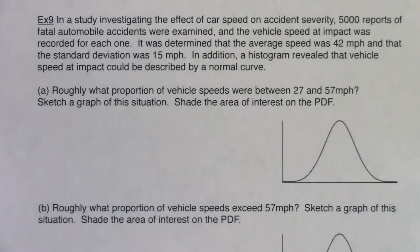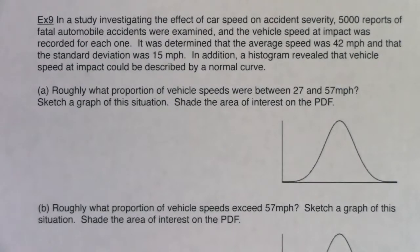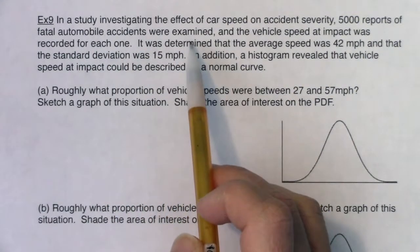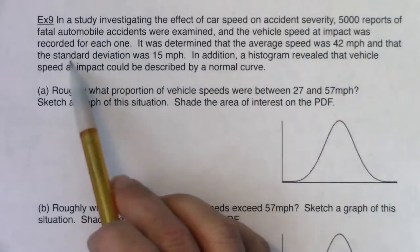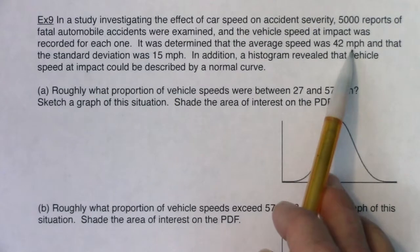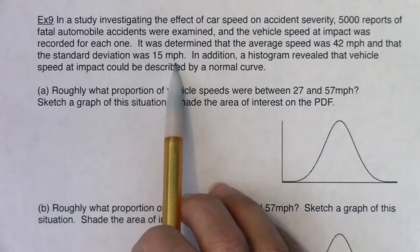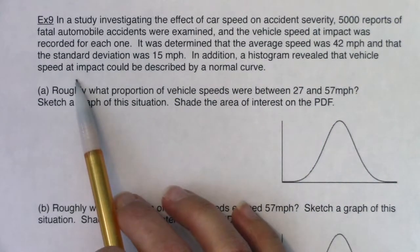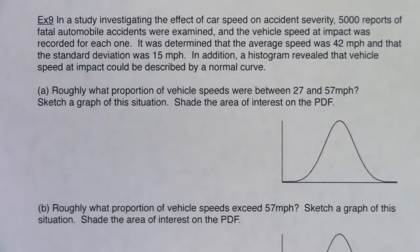Math 43, let's put that empirical rule to use. I'm going to read Example 9 and I want you to listen for what the variable is in this problem. So in a study investigating the effect of car speed on accident severity, 5,000 reports of fatal automobile accidents were examined and the vehicle speed at impact was recorded for each one. It was determined that the average speed was 42 miles per hour and the standard deviation was 15 miles per hour. In addition, a histogram revealed that vehicle speed at impact could be described by a normal curve.